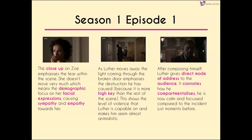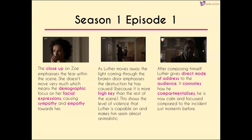After composing himself and leaving Zoe's, Luther gives direct mode of address to the audience, showing how he compartmentalizes his emotions — now calm and focused compared to the incident just moments beforehand. We cut back to the scene to emphasize the emotions that happened there and leave the audience with those emotions. Zoe still hasn't moved and is frozen in shock, which might well be what some of the audience are experiencing too. We then have a cut to an extreme close-up of Luther taking off his wedding ring — anytime anybody takes a wedding ring off in any show, it's very symbolic of the relationship being over.